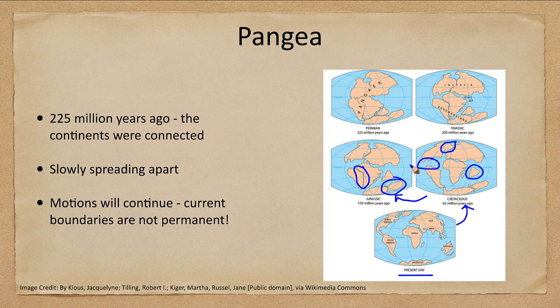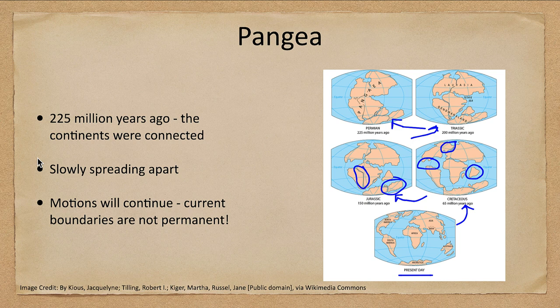Again, no Central America. Going back further to 200 million and 225 million years, all the continents were joined together in Pangaea. This is a constant changing process — they have been slowly spreading apart for millions of years, in fact all of the time of Earth, and that process will continue. The boundaries we see right now will not be the same 50 million years from now.